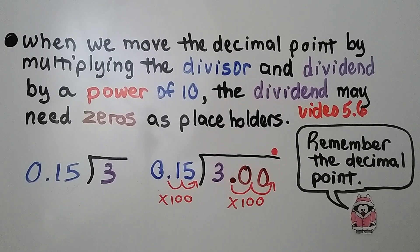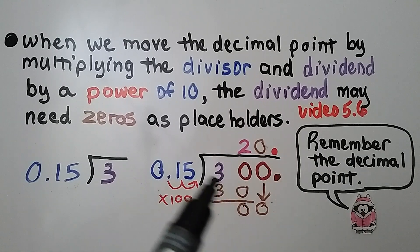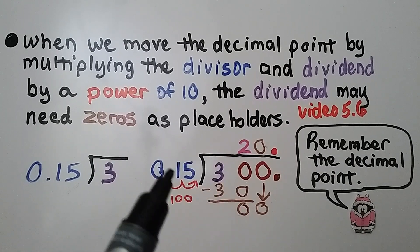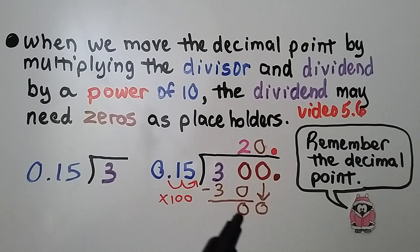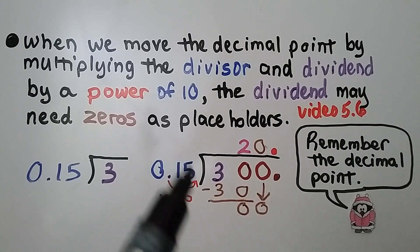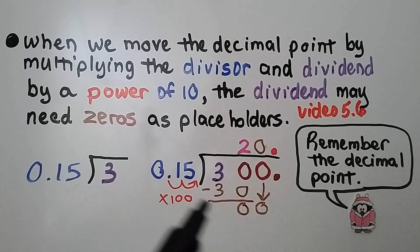Now we'll be able to complete our division. Fifteen fits into thirty two times because fifteen times two is thirty. We subtract and get a zero. Fifteen — it's this zero's turn to come down. Fifteen fits into zero zero times. That's our quotient: twenty.